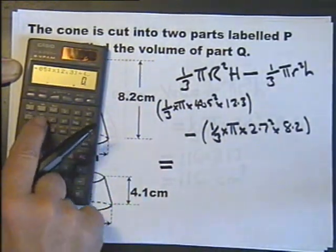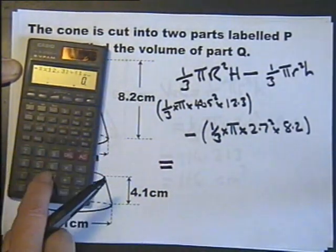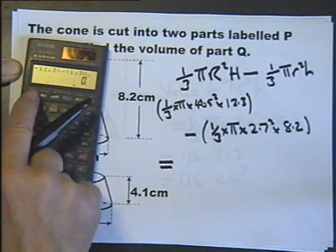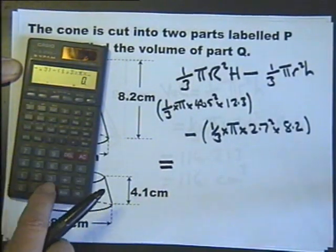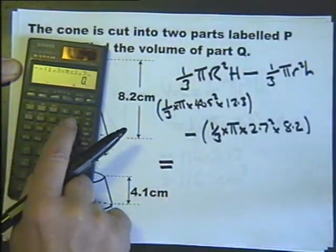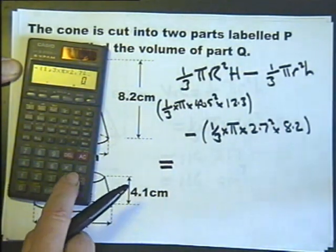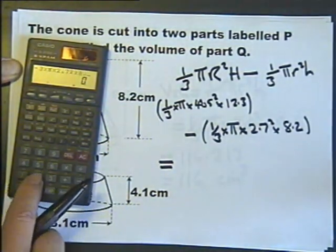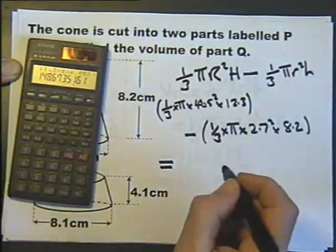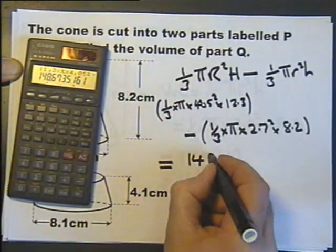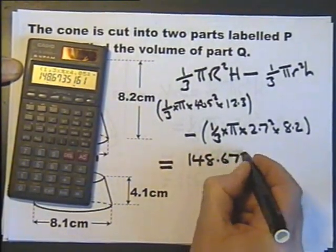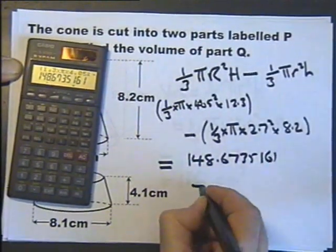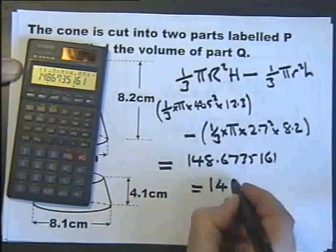open brackets, one, fraction button three, multiplied by pi, multiplied by 2.7 squared, multiplied by 8.2, close brackets, equals. So, we'll do that to the whole number again, I think.